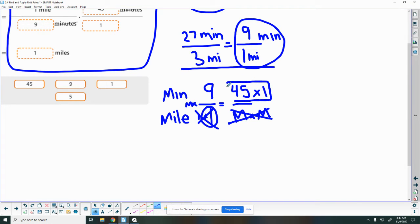So 45 times 1 is 45. So I'm going to rewrite my problem. So I have M times 9 equals 45 times 1 is 45. So remember, I'm trying to get M all by itself. So now I can say the opposite of times by 9 is to divide by 9. So that cancels out to a 1. So now I need to do divide by 9 here.